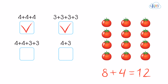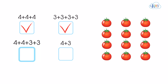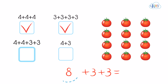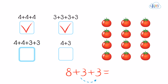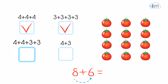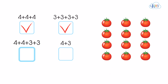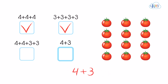Now we can check the other ones quickly just by seeing if they add to 12. Four plus four plus three plus three — well, 4 plus 4 equals 8 and 3 plus 3 equals 6, so I have to add 8 plus 6. Six plus 8 equals 14, so that one is no good. And finally, 4 plus 3 equals 7, so that does not represent this picture or the number 12.